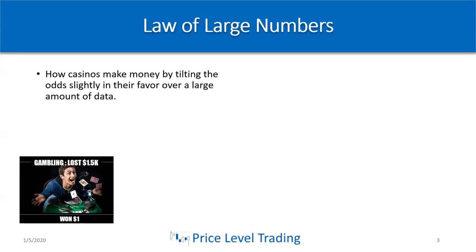The first topic is the law of large numbers — this is how casinos make money. Basically, over a large dataset of thousands of data points, a certain value is eventually converged upon. For example, the probability or profit potential of a casino will eventually converge towards a certain number. Let's say you're gambling at the blackjack table and you put down a hundred bucks, play for an hour or two, and turn that into five hundred or a thousand dollars.